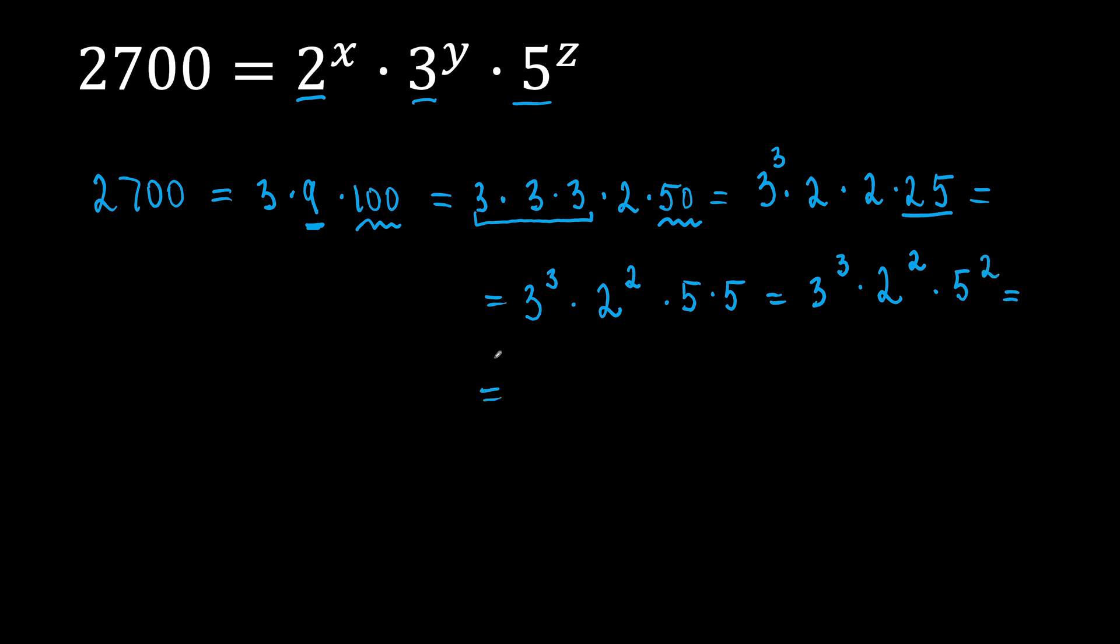And now, let's write it in order, the way we are given in the statement. So, 2 to the power of 2 times 3 to the power of 3 times 5 to the power of 2. So, we totally see the x, y, and z.